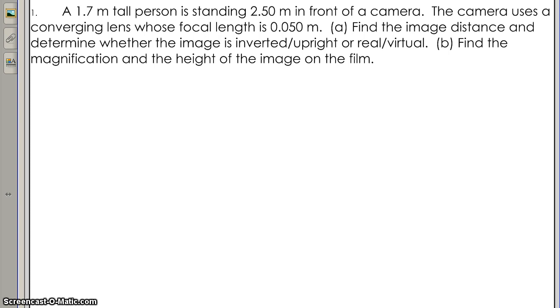Part A: Find the image distance and determine whether the image is inverted, upright, or real virtual. Part B: Find the magnification and the height of the image on the film.